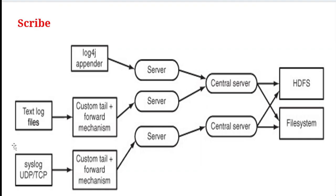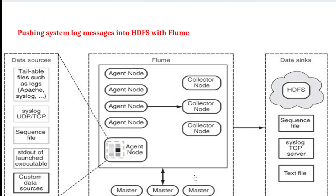Apache Scribe also follows a similar architecture. Data comes from text log files, system log files like TCP and UDP, and log4j appenders. Custom tail and forward mechanisms pass data to a server, then to a central server, and finally to HDFS and file systems.